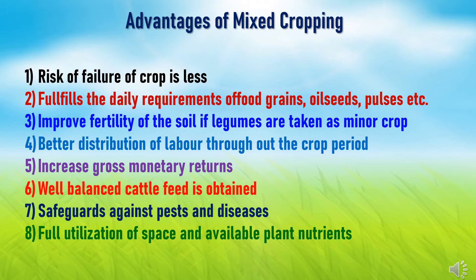Mixed cropping fulfills the daily requirements of food grain crops, oilseed crops, and pulses through its combination of various crops. Mixed cropping improves soil fertility — if legumes are taken as minor crops, since legume crops have nitrogen-fixation capacity, they supply nitrogen to the soil, benefiting other crops. There is also better distribution of labor throughout the crop period because different crops require work based on their own necessity. Additionally, there is an increase in gross monetary returns because of combining different types of crops such as cereals, oilseeds, pulses, and vegetables.